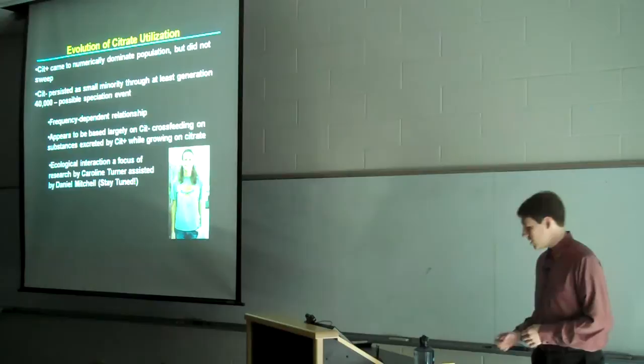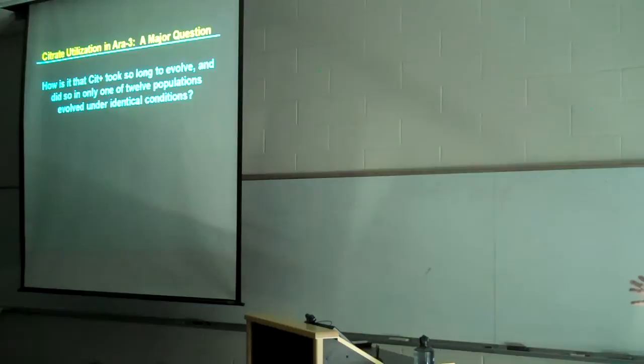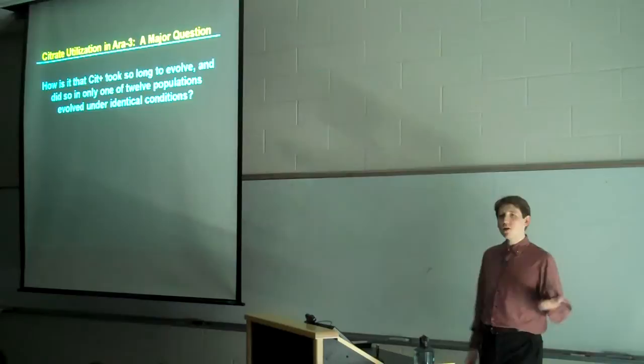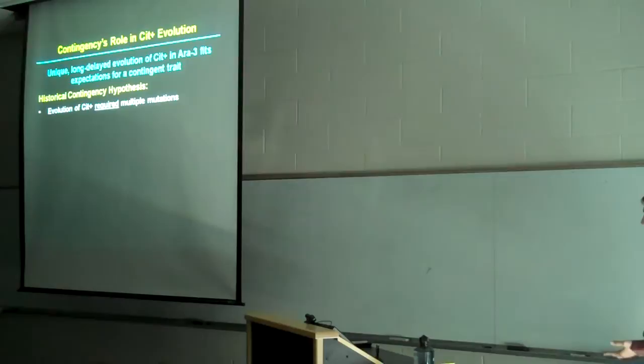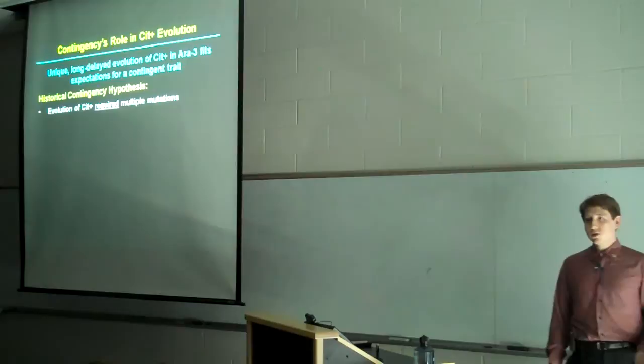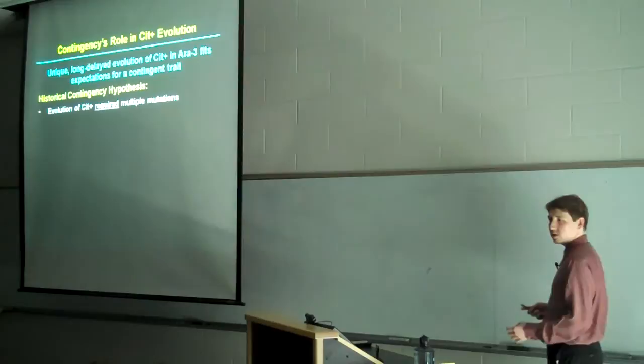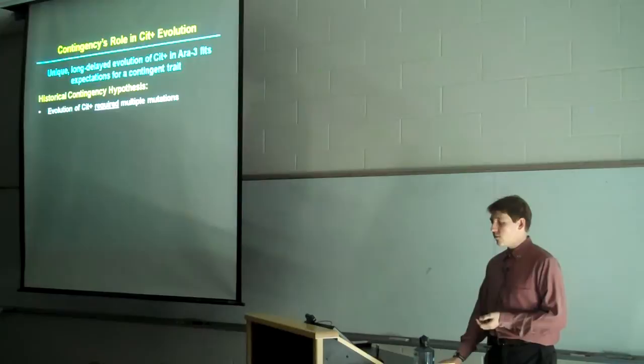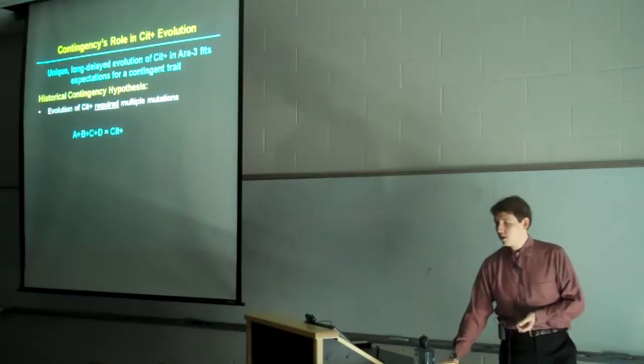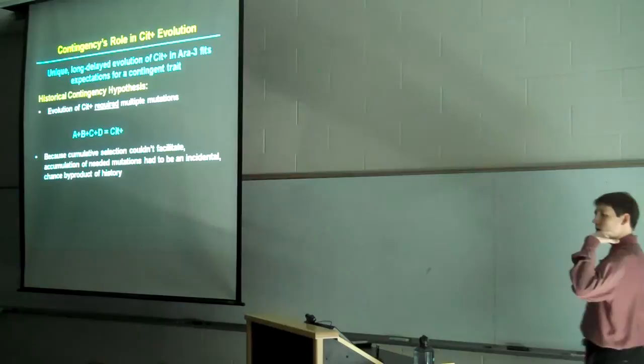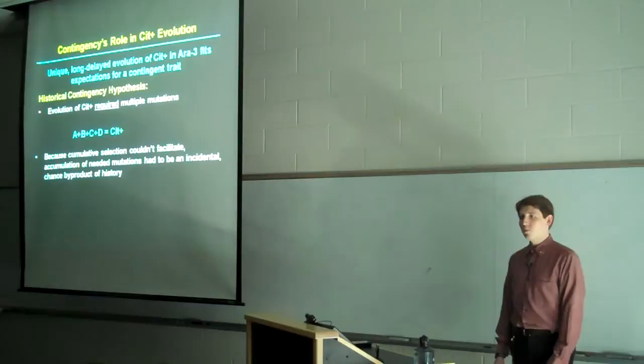But one of the big questions that came from Cit plus is this. How is it that Cit plus took so long to evolve and did so in only 1 in 12 populations, even though they were evolved under the same conditions, with the citrate there the entire time? Well certainly the unique and long-delayed evolution of Cit plus in Ara minus 3 fits the expectations that I put forth for a contingent trait. So it's perfectly reasonable to pose a historical contingency hypothesis which would hold that the evolution of Cit plus required multiple mutations. Say for instance it needed four mutations. You get one, no Cit plus. Two, no Cit plus. Three, no, you have to have all four in order to get that Cit plus trait. Because cumulative selection could not facilitate the accumulation of this because evolution has no foresight.